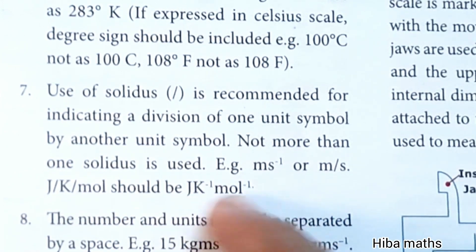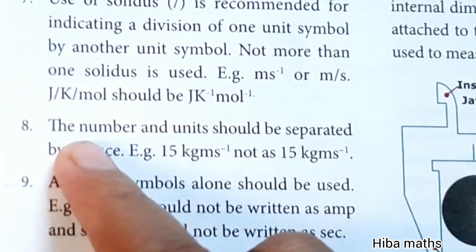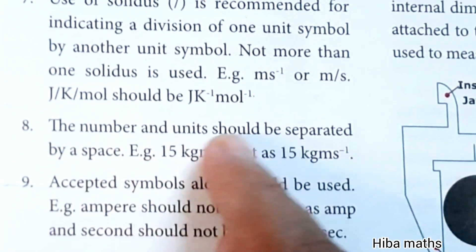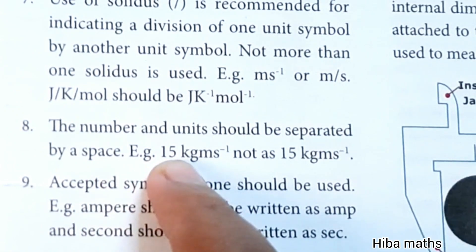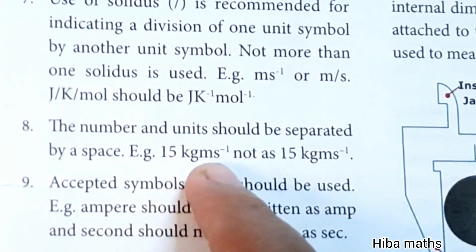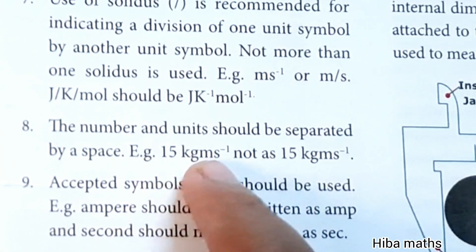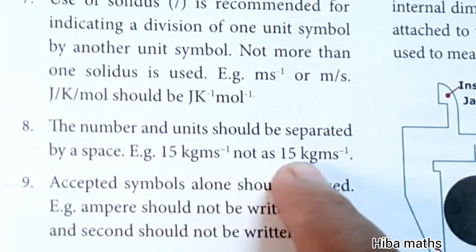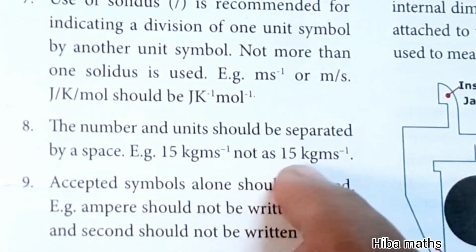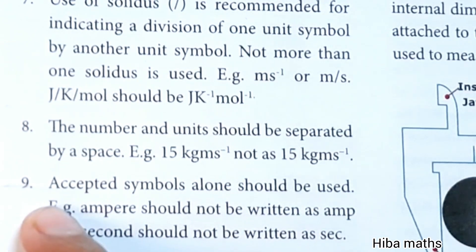Eighth point: the number and units should be separated by a space. For example, 15 space kilogram per meter second. Write '15 kg/m·s' with a space between the number 15 and the unit.